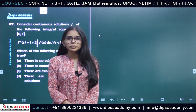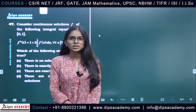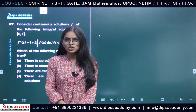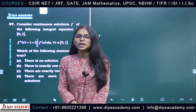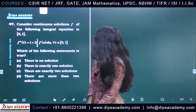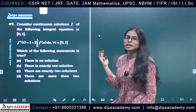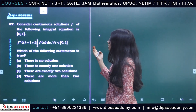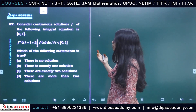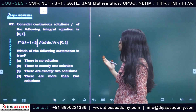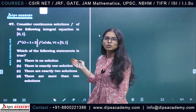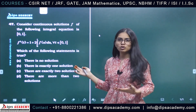Hi everyone, here we will be discussing the CSIR NET 30th November 2020 question, which is of the subject integral equations. So let's start the question. We are given with an integral equation: f squared of t equals 1 plus 2 times the integration from 0 to t of f(s) ds, for all t belonging to [0, 1].